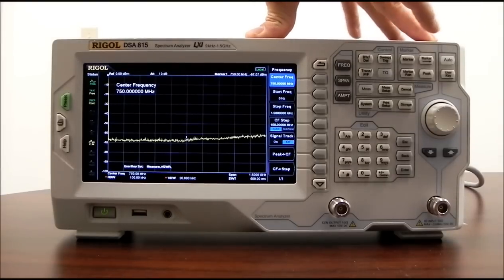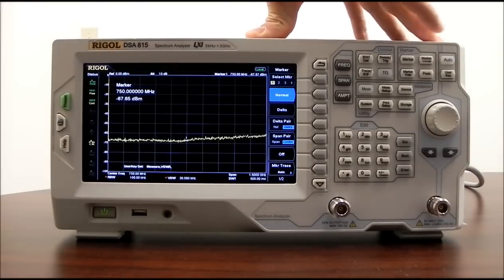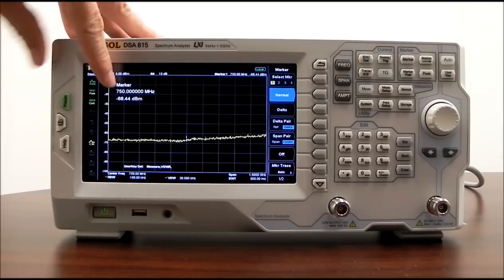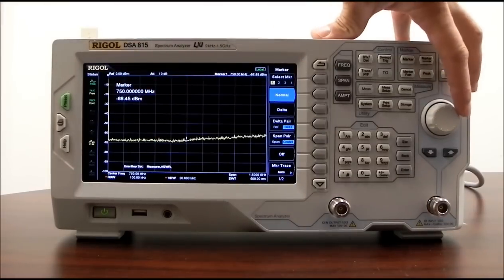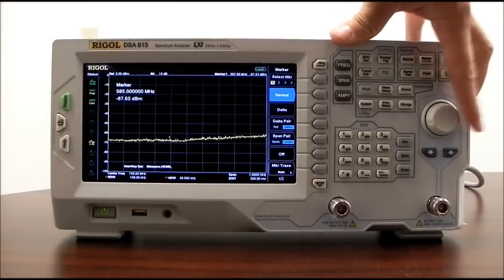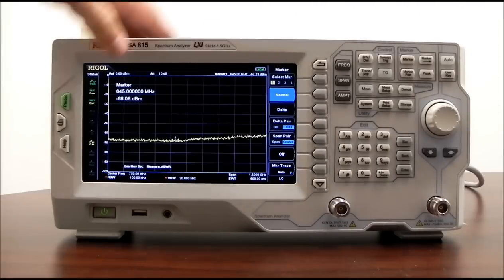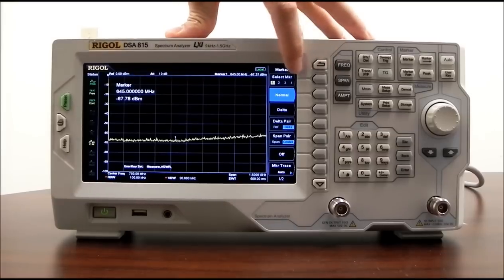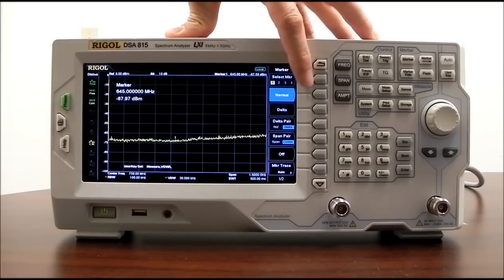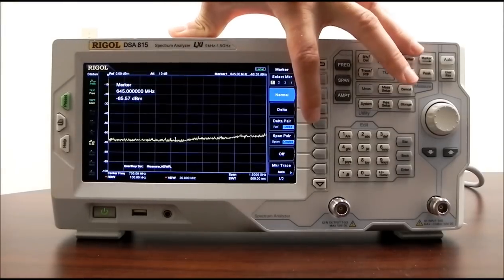Now let's take a look at some of the marker capabilities. A marker is going to give us the amplitude value at that particular frequency value. Here we have a marker number one. And we can see we can move that around to different points on the trace. And it will give us a different frequency value and a different amplitude value. The available markers, we have four available markers that are either normal or delta or delta pair.